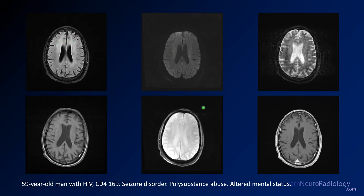Diffusion is pretty normal. T1 pre-contrast is pretty normal. There's no enhancement and no gradient abnormality. Just a subtle FLAIR abnormality in the paraventricular white matter.